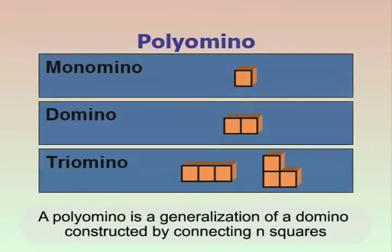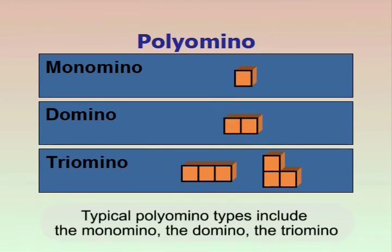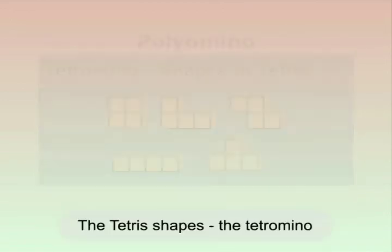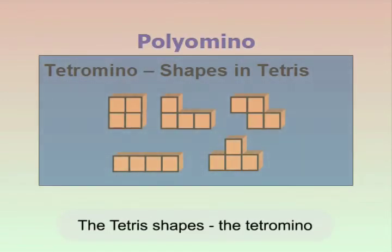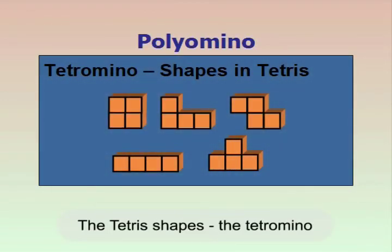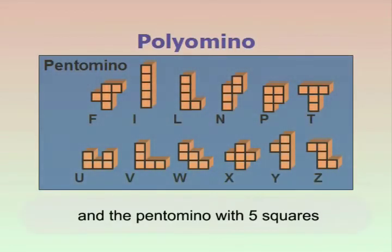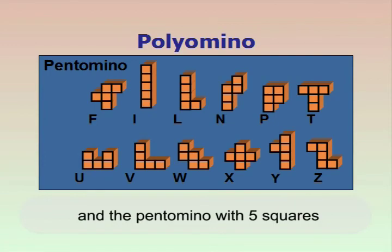A polyomino is a generalization of domino constructed by connecting end squares. Typical polyomino types include the monomino, the domino, the triomino, the tetris shapes called the tetramino, and the pentamino with 5 squares.